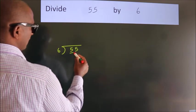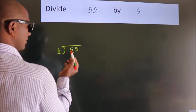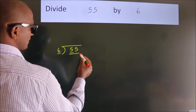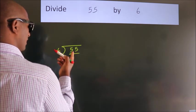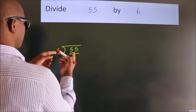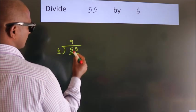Here we have 5, here 6. 5 is smaller than 6. So we should take two numbers: 55. A number close to 55 in the 6 table is 6 nines, 54.